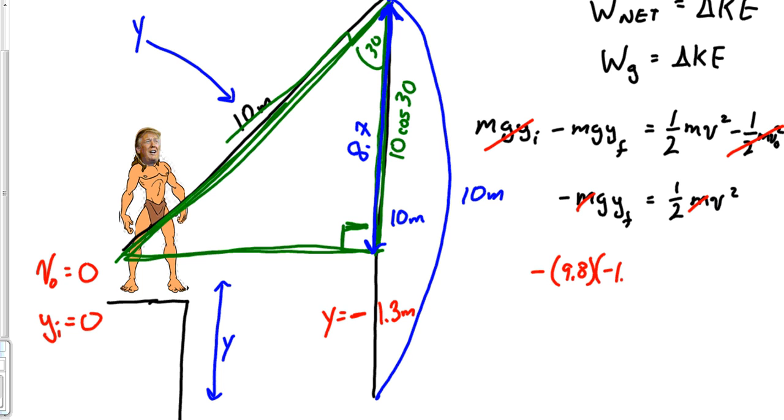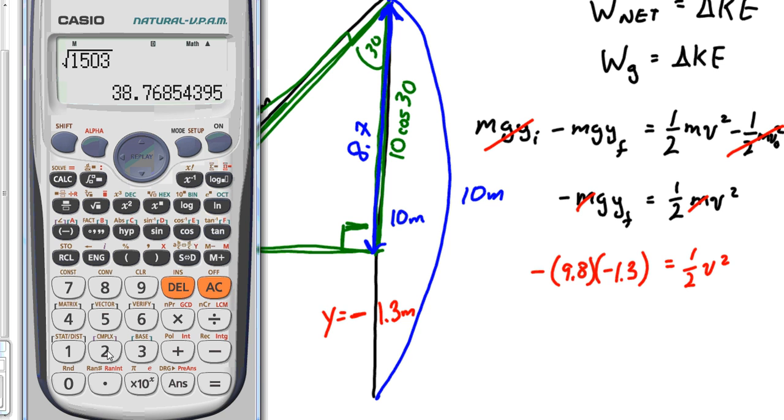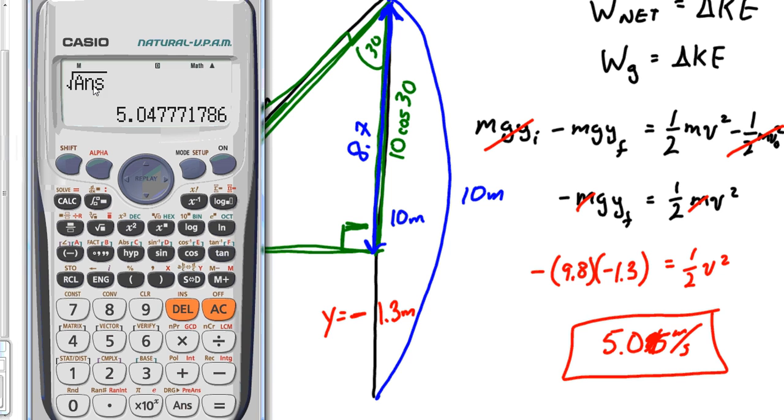So all you have to do: negative g, negative 9.8. Notice the negatives will cancel. Negative 1.3 equals one-half v squared. Pull up our calculator: 9.8 times 1.3 divided by half, so I'll just go times 2, take the square root. Our answer is 5.04, 5.05 meters per second.